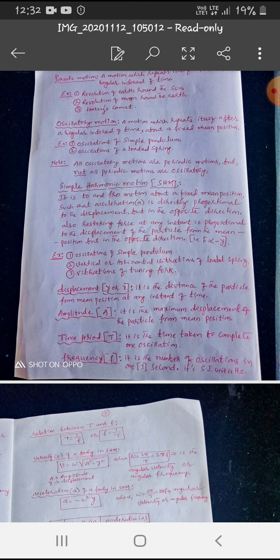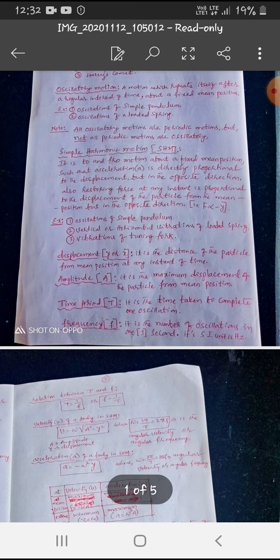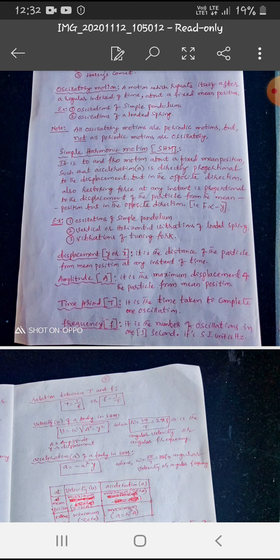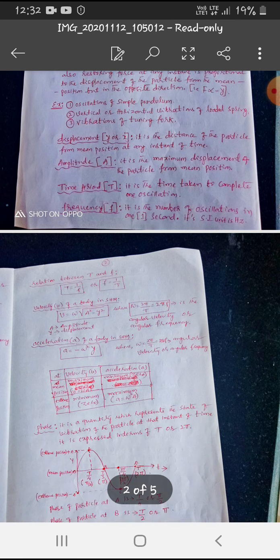What is displacement? It is the distance of the particle from mean position to instead of time. And amplitude, it is the maximum displacement of the particle from mean position. And amplitude 2 is the time taken to complete one oscillation and frequency, it is the number of oscillation happened in one second is the frequency.